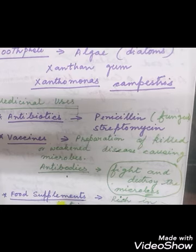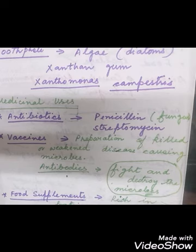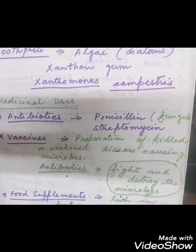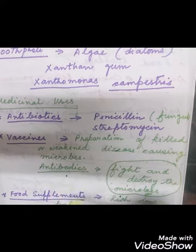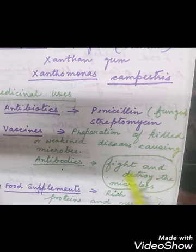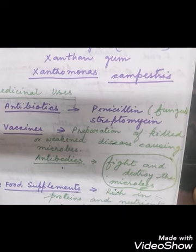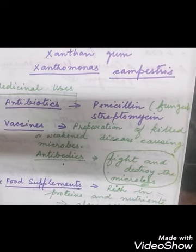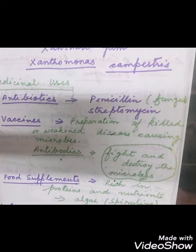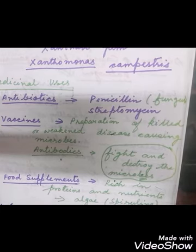Vaccines are killed or weakened disease-causing pathogens introduced into our body. When the vaccine enters the body, our body releases antibodies to kill the introduced germs. While fighting, we may get fever and other symptoms. Vaccines are given so that our body develops antibodies against a particular disease. The body then has a memory, so if there is a second attack the symptoms and suffering will be much less than the first time.